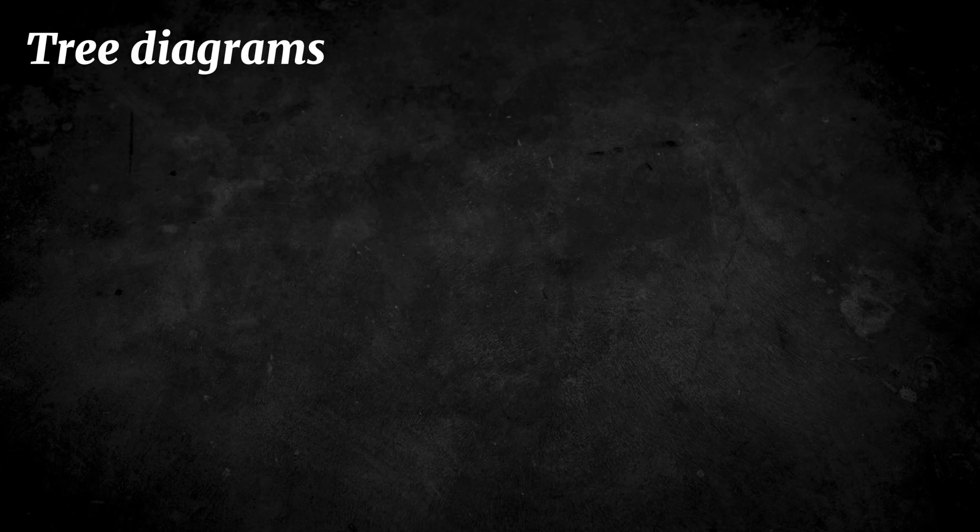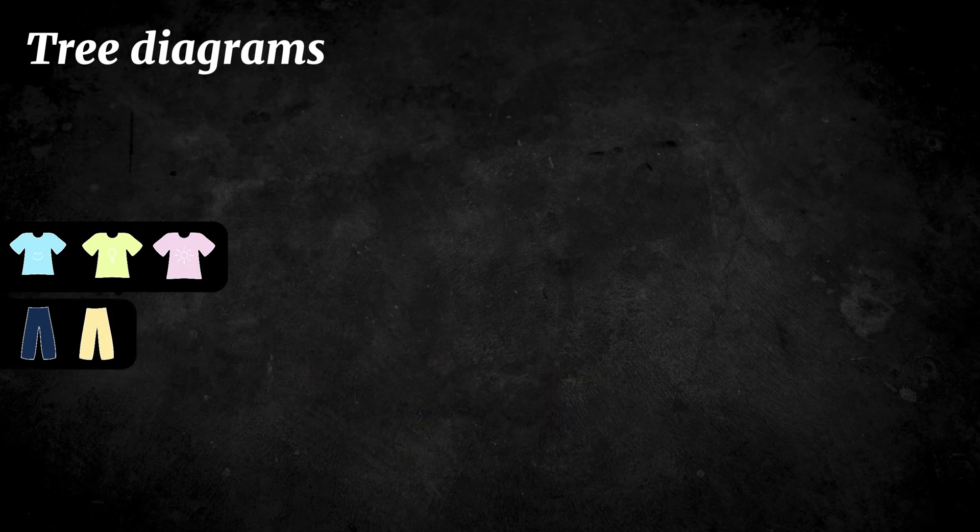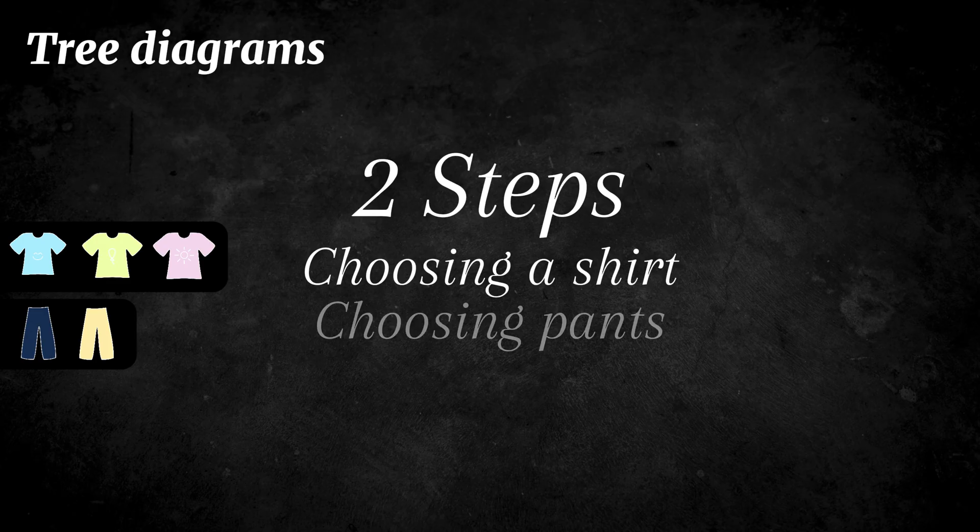Imagine again the example of choosing an outfit. Suppose you have three shirts and two pairs of pants. Then there are two steps, first choosing a shirt and then choosing a pair of pants.